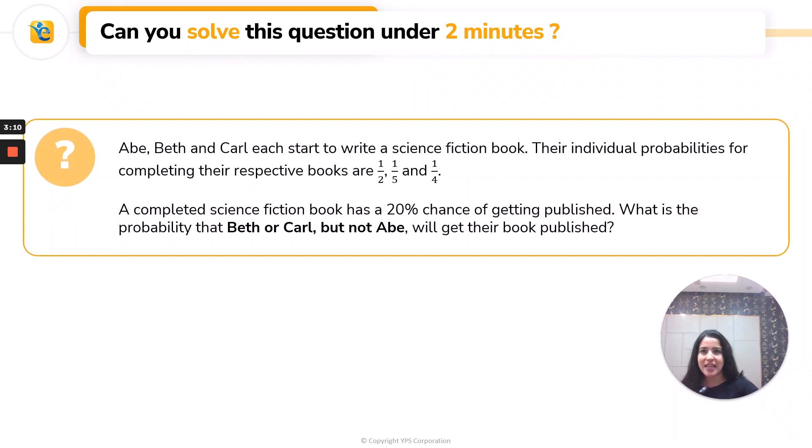Now just read the question. What is the probability that Beth or Carl, but not Abe, will get their book published? Does this question itself scare you? I think it will scare a lot of people.